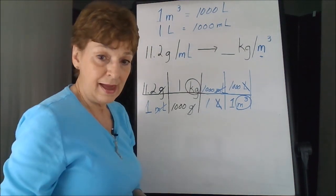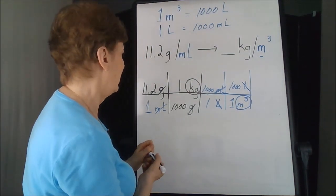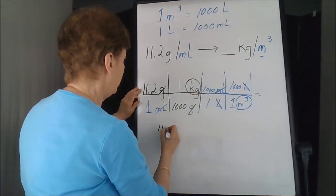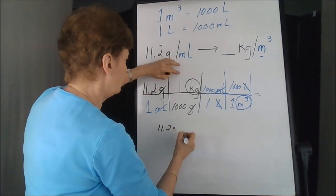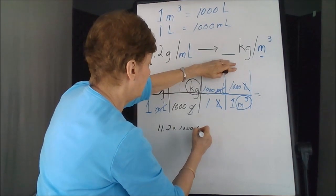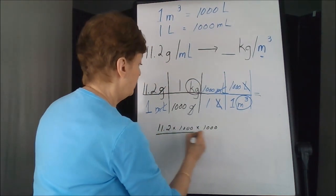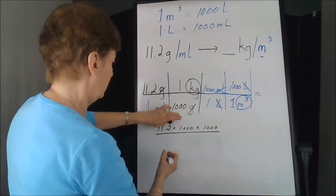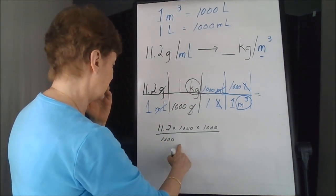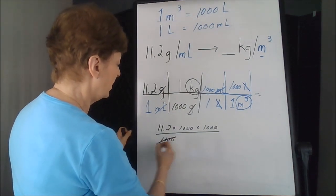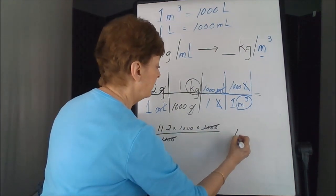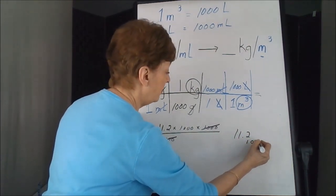Now I can do the math. We've got 11.2 times 1 times 1,000 times 1,000 divided by 1, here's 1,000, 1, and 1, so just by 1,000. One of the thousands wipes out one of the thousands. Then our problem is only 11.2 times 1,000.